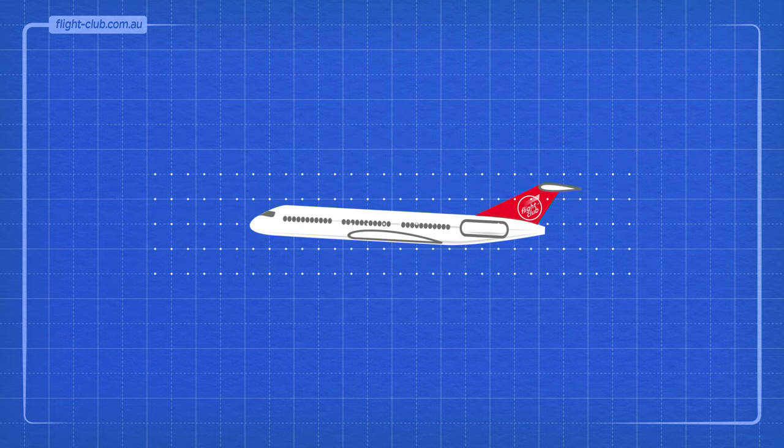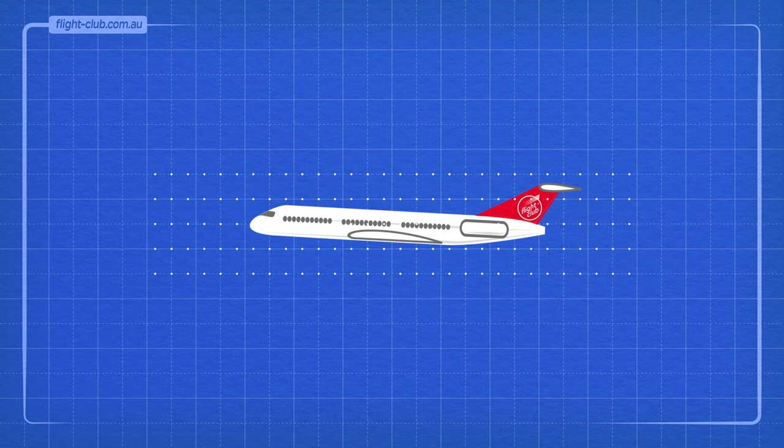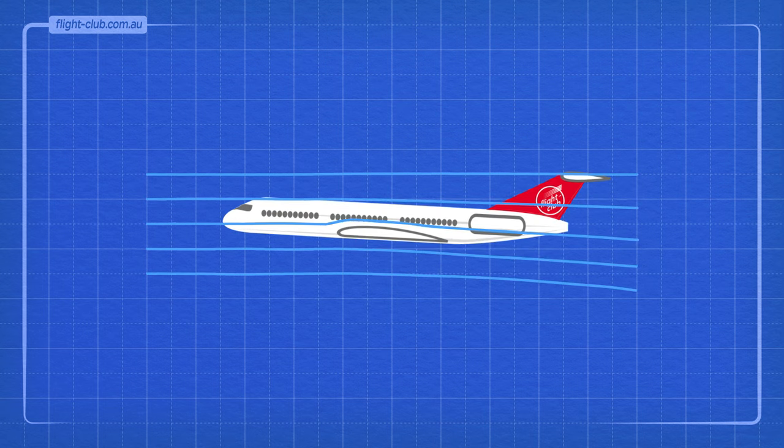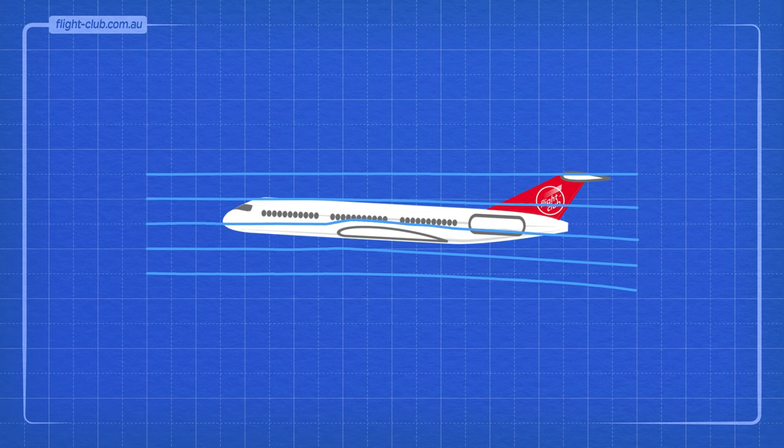With respect to the motion of the aeroplane, these particles form straight lines of flow. Let's have a closer look at what happens to this airflow when it flows around the aerofoil of a swept wing design aeroplane.